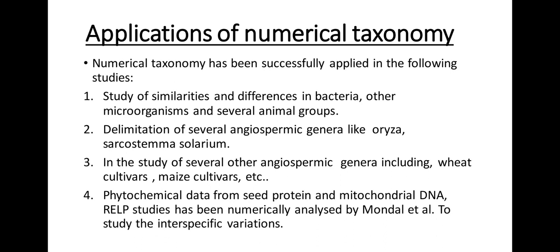Some major applications of numerical taxonomy: it has been successfully applied in the study of similarities and differences in bacteria, other microorganisms, and several animal groups; in the delimitation of several angiospermic genera like Oryza, Sarcostemma, and Solanum; in the study of wheat and maize cultivars; and phytochemical data from seed proteins and mitochondrial DNA RFLP studies have been numerically analyzed to study inter-specific variations.